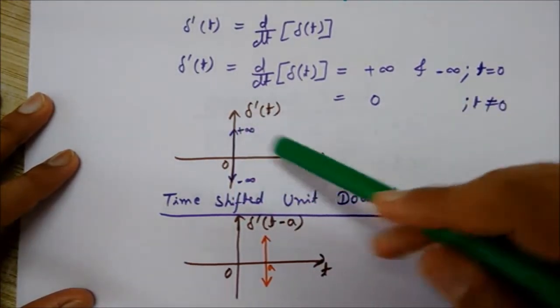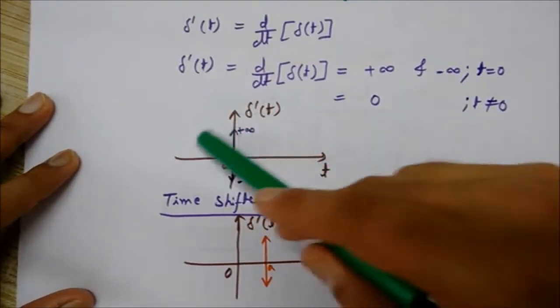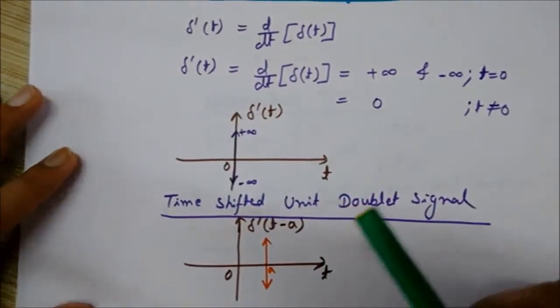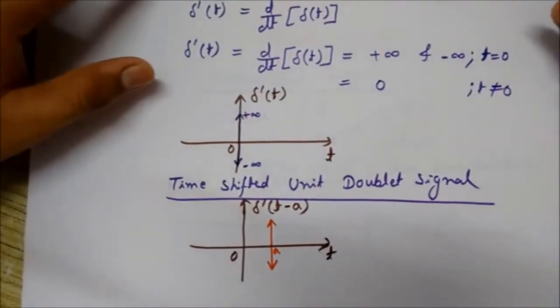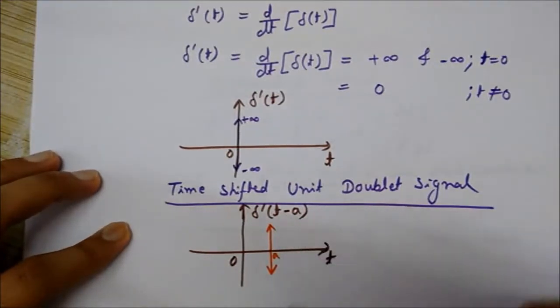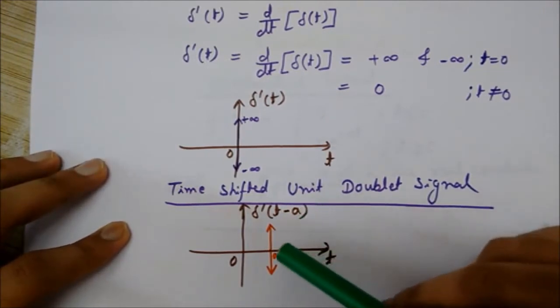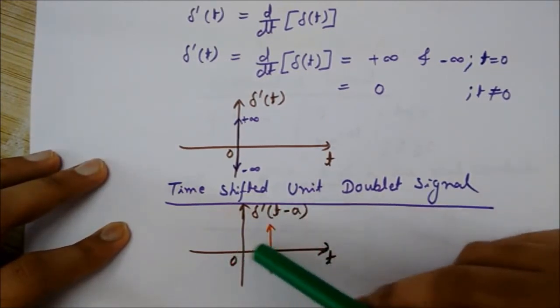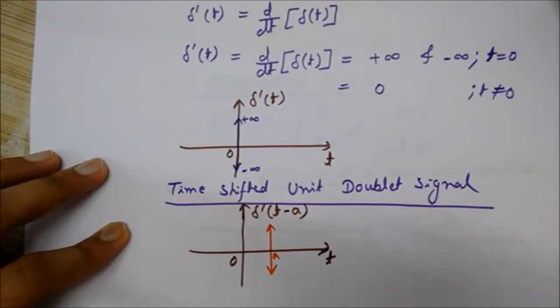Now see the time-shifted unit doublet signal. This is the graph of the time-shifted unit doublet signal. It has been shifted by a constant value a on the right side, so it has been delayed in time by a.